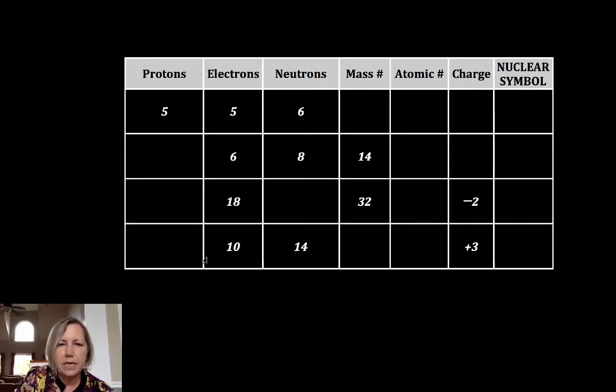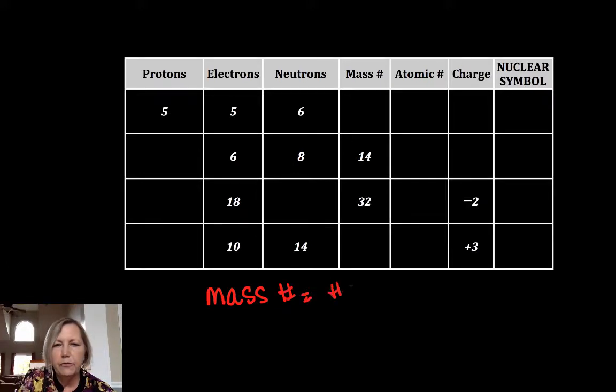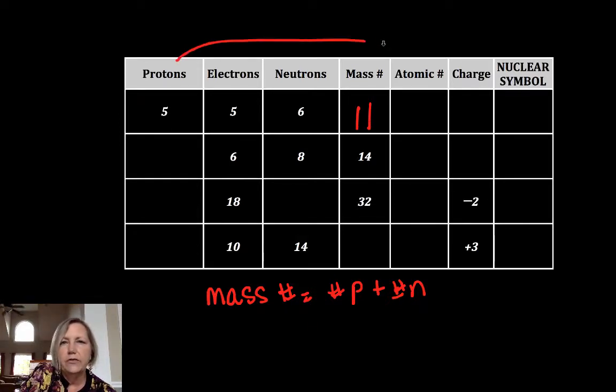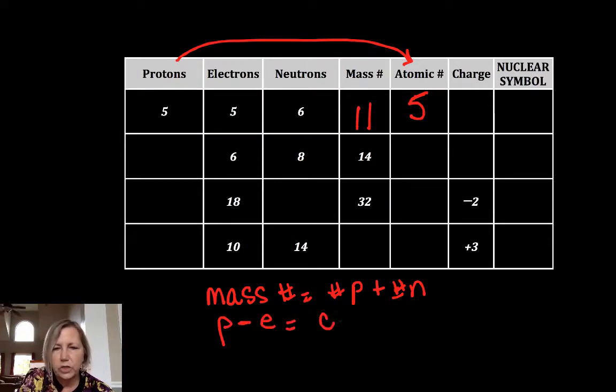The first box asks me what my mass number is. My mass number equals my number of protons plus my number of neutrons. I know both of those in this column: five plus six is eleven. My atomic number is equivalent to my number of protons, so that's going to be a five. My charge is protons minus electrons, which is equal to charge.